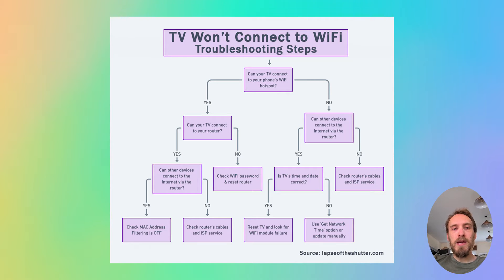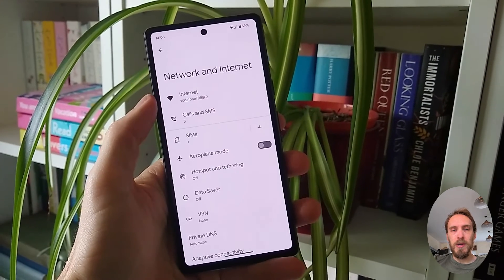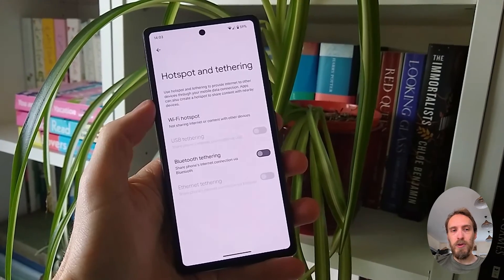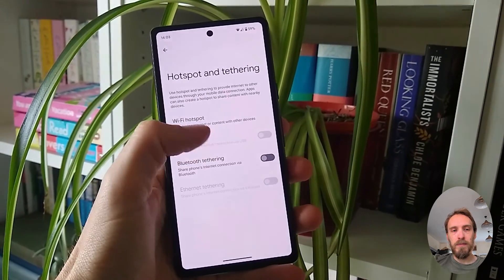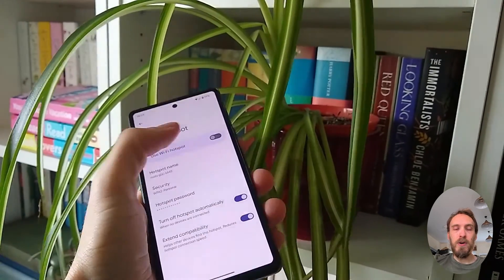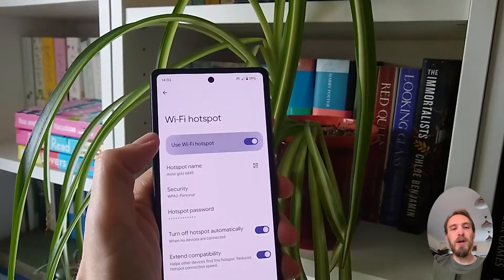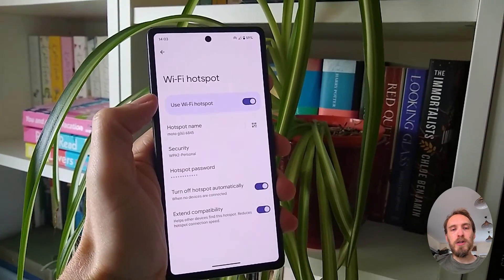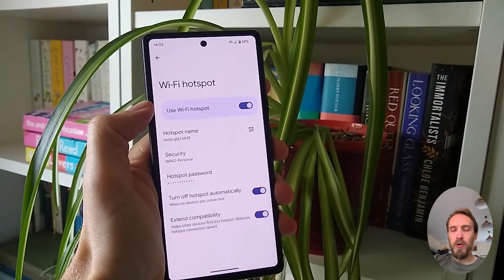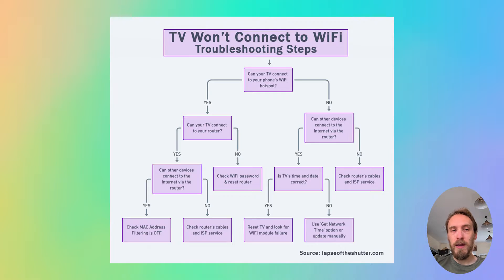If your TV connects to your phone hotspot and can access the internet through your phone — assuming you've got mobile data switched on — then you can assume the problem is with your router and not your TV. If your TV will not connect to your phone hotspot, then you either have a software issue with your TV or a hardware problem with the Wi-Fi card in your TV.